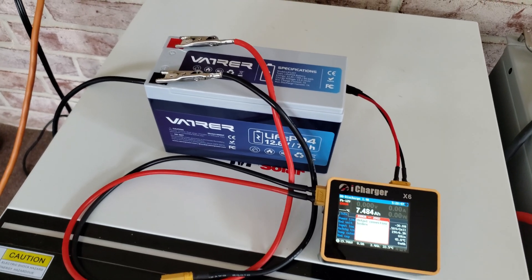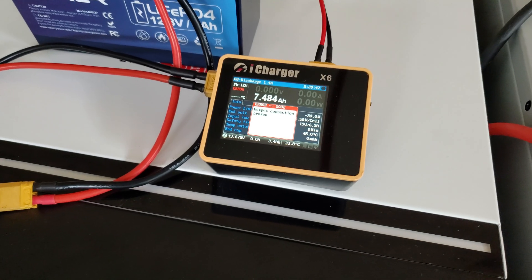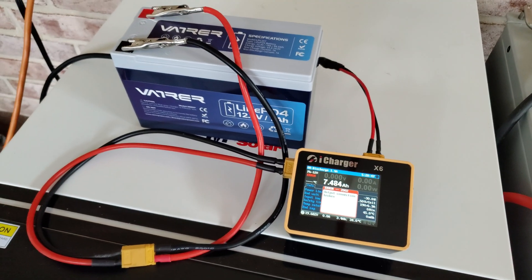I did run a capacity test, it came in at 7.4 amp hours. I used the iCharger X6 and I discharged at a 0.2c rate which is approximately 1.4 amps. We're just going to take a very quick look at the specifications of this battery and then we'll jump to the teardown.